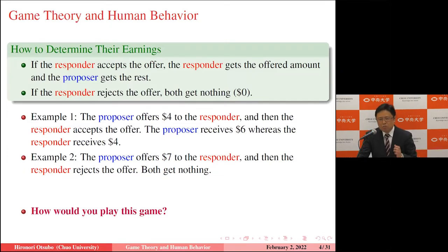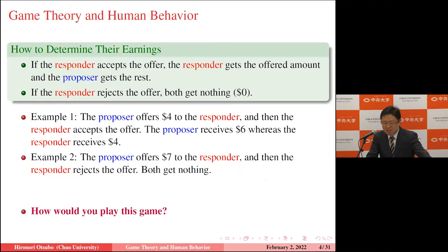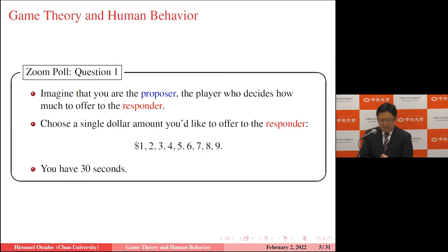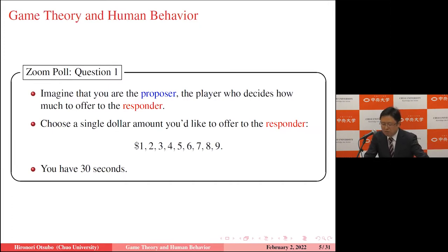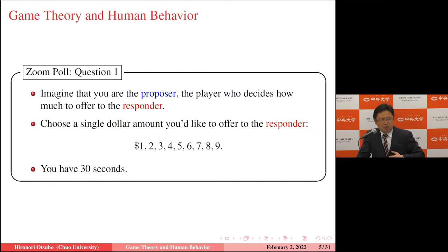Now, how would you play this game as either proposer or responder? I've prepared two questions so you can experience this game. Question one: imagine you are the proposer — the person who decides how much to offer to the responder. You have $10. Choose a single dollar amount you'd like to offer: $1, $2, and up to $9. I will give you 30 seconds to submit your responses via the poll.